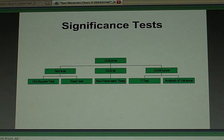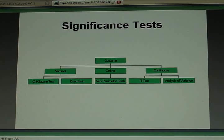If your outcome is ordinal in scale, your outcome is how do you feel today - excellent, very good, good, fair, poor - or stage of disease, you'd probably do something called a non-parametric test.